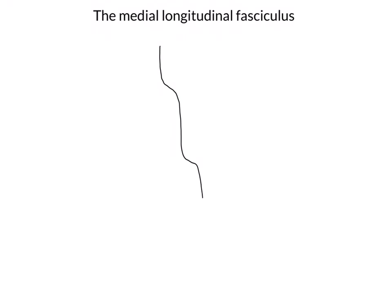So here is the midbrain, pons and medulla going into the cord. We're going to draw on our midline using a dotted grey line. This is important because the medial longitudinal fasciculus crosses the midline because of its importance in coordinating conjugate movements of the left and right eyes.